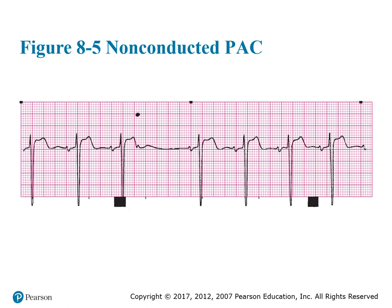This is what a non-conductive PAC looks like. You see your P waves, and then right here you have a T, and then you have a P but no QRS — and then there you go with a P again. So it kind of looks like a pause. That's what we call a non-conductive PAC, when you have a T-on-P effect where the P and the T are almost on top of each other, and it's not followed by a QRS.